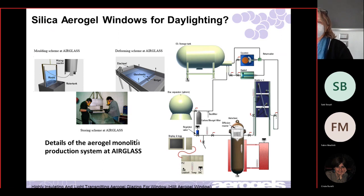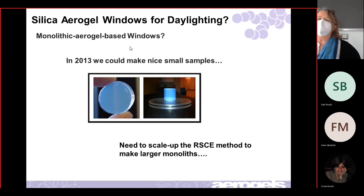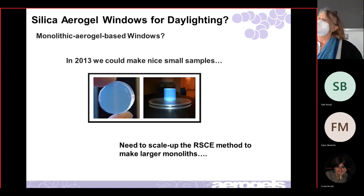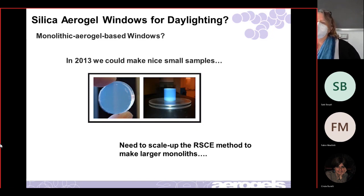So in 2013 we could make beautiful small samples — we were using them for different things like sensors with dyes or fiber-reinforced aerogels — and we didn't need anything larger. But as a result of that NSF program, we recognized that if we could scale up our rapid supercritical extraction method to make larger monoliths, we could potentially contribute to the daylighting window market.